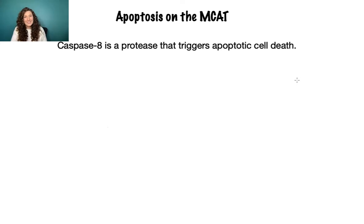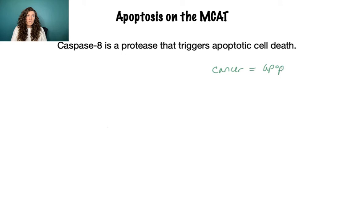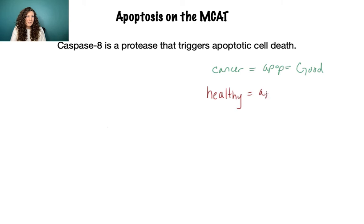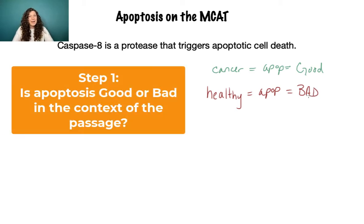Death almost always sounds bad — we don't want death. But it really depends on what passage this sentence is in. For example, if the passage was about cancer — which is just uncontrolled cell growth — then apoptosis would be good; we'd want to kill off those cancer cells. Or it could be a bad thing if you have healthy cells, such as neurons, and the passage is about a disease that triggers apoptosis in healthy cells. Then apoptosis is bad. So that's the first step: establishing what's good versus what's bad.